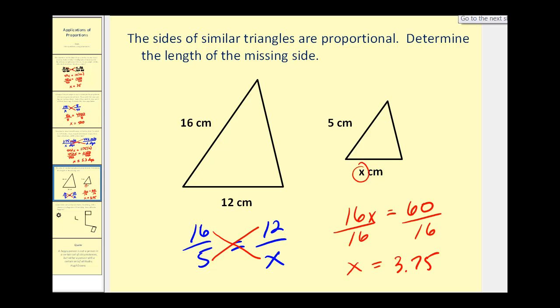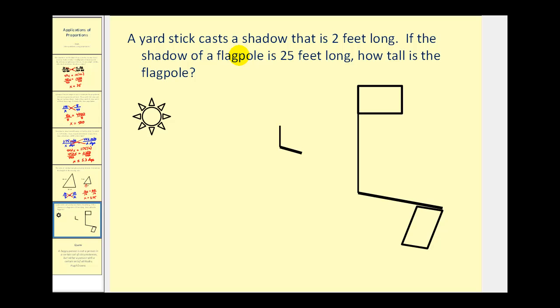I think we have time for one more example. One of my favorites. In this problem, we have a yardstick that casts a shadow two feet long. If the shadow of a flagpole is 25 feet long, how tall is the flagpole? So on a sunny day, we can determine the height of a flagpole without ever having to measure the actual flagpole. So if this is our yardstick, this would be 3 feet. And the shadow would be 2 feet. And then it also tells us that the shadow of the flagpole is 25 feet long, measured here. And the height of the flagpole is actually the unknown.